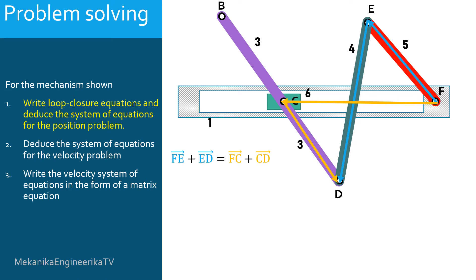Let's move now to the second equation. The second loop vector equation involves the bar BD or link 3, the bar ED or link 4, the bar EF or link 5, and the slider C or link 6. The vector FE is the vector position of link 5, denoted as R5. The vector ED is the vector position of link 4, denoted as R4. The vector FC is a second vector position of link 6, denoted as R6B. The vector CD is a second vector position of link 3, denoted as R3B.